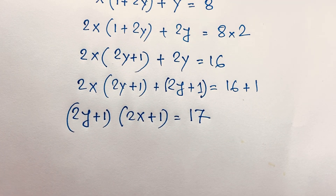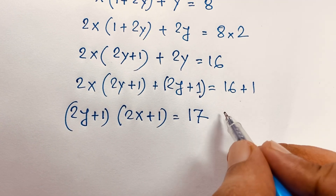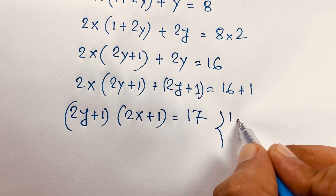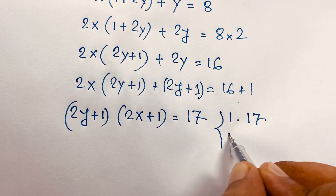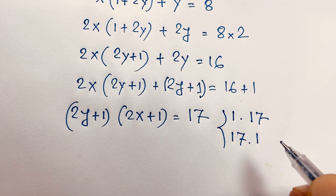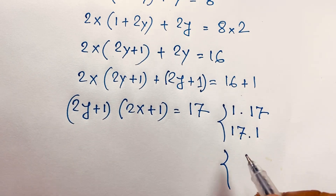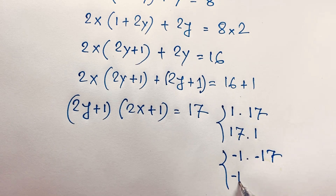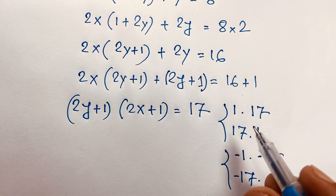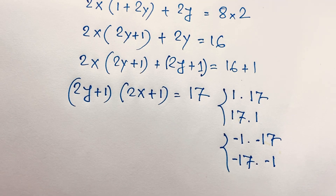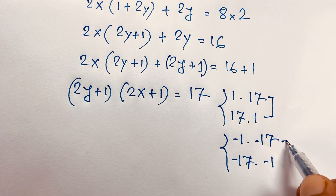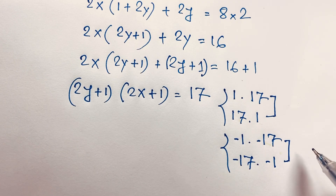Now at this moment, you can see easily this 17. If I find out the factors, it will be 1 times 17 or 17 times 1. 17 is a prime number. But in this case and this case we will find out the same answer. And in this case, we will find out the same answer.